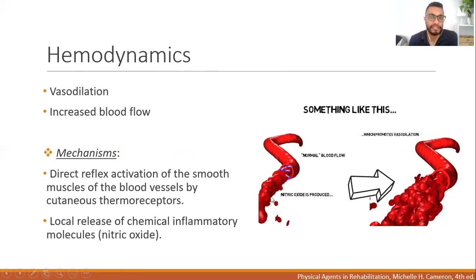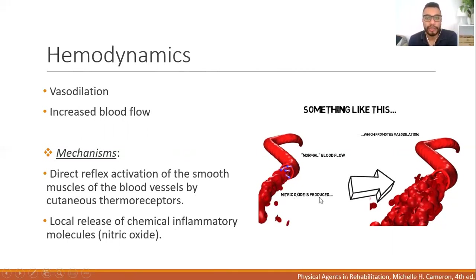As a response, there is a local release of chemical inflammatory molecules in the blood vessels. Nitric oxide is an example of these molecules, and when nitric oxide is produced it promotes vasodilation — nitric oxide is a potent vasodilator.